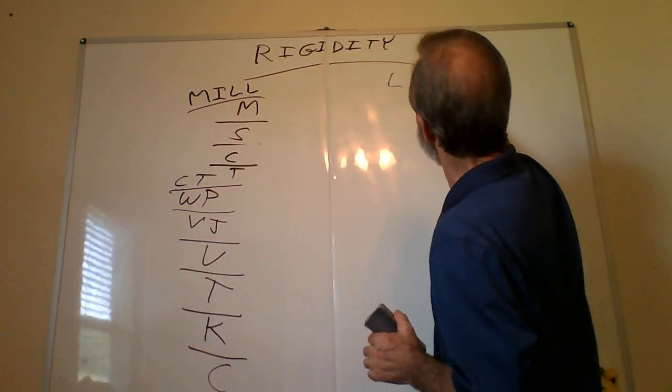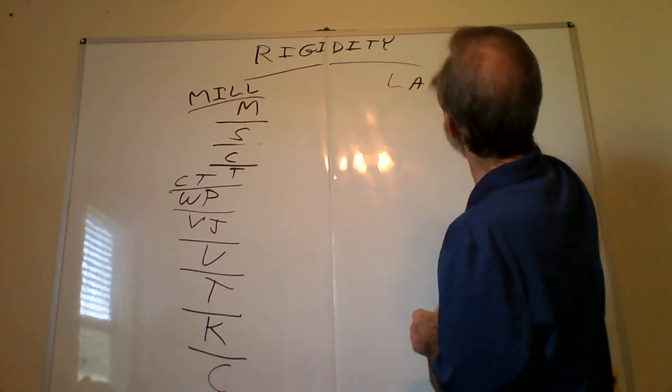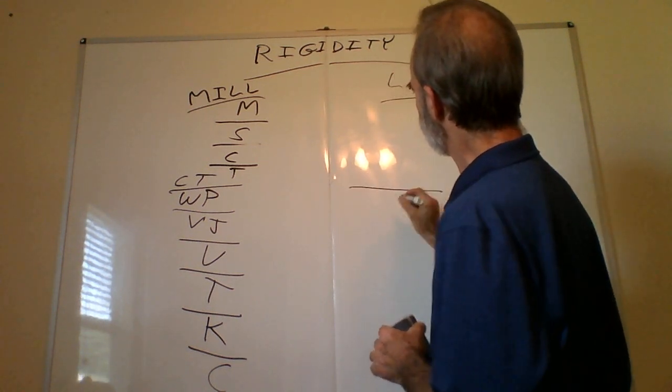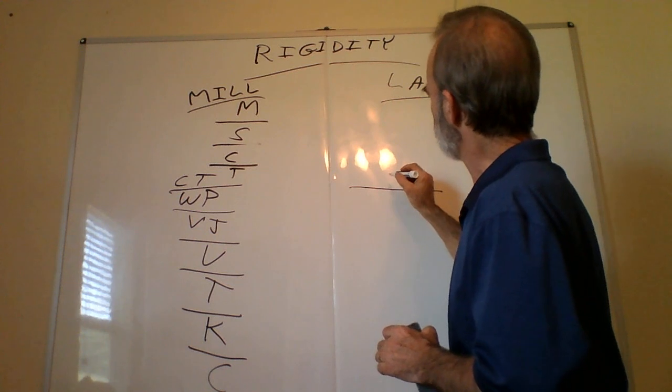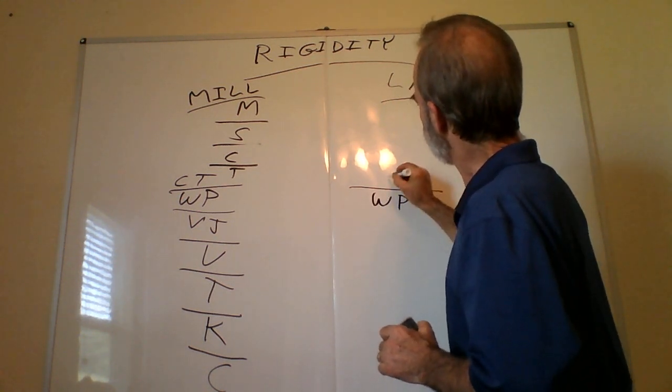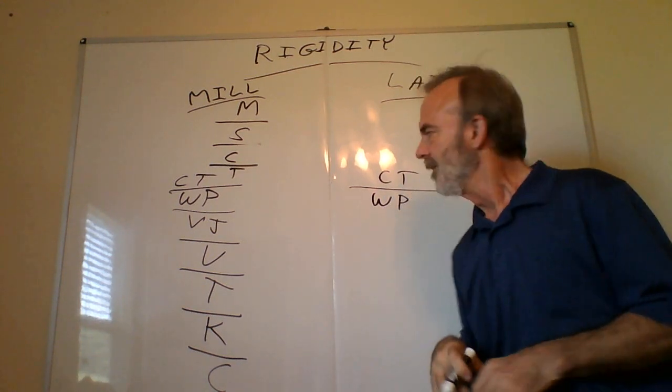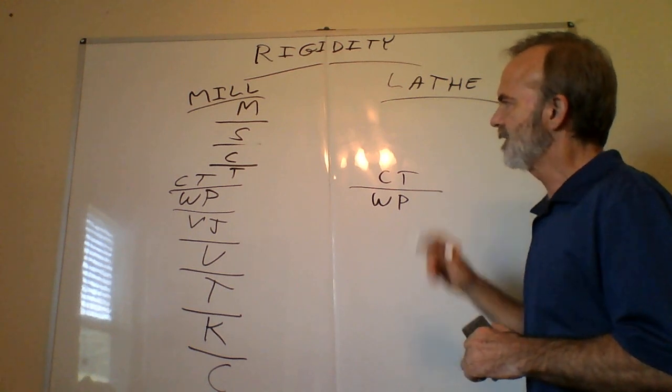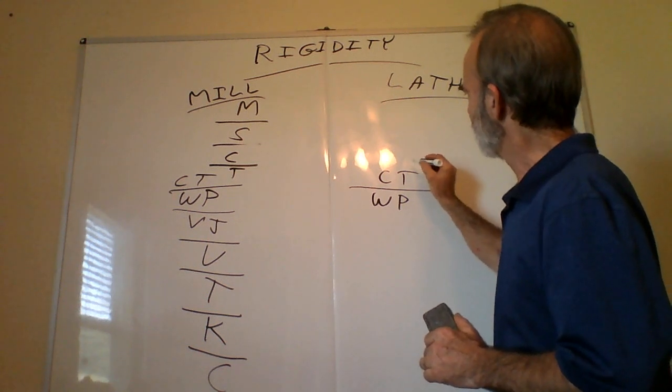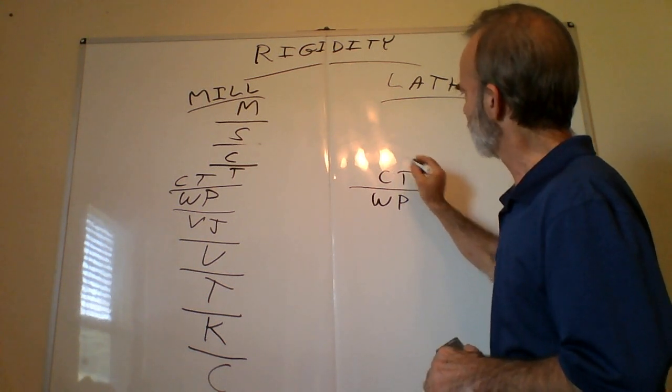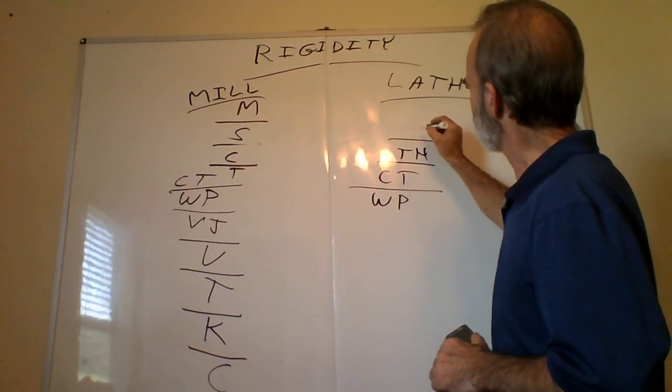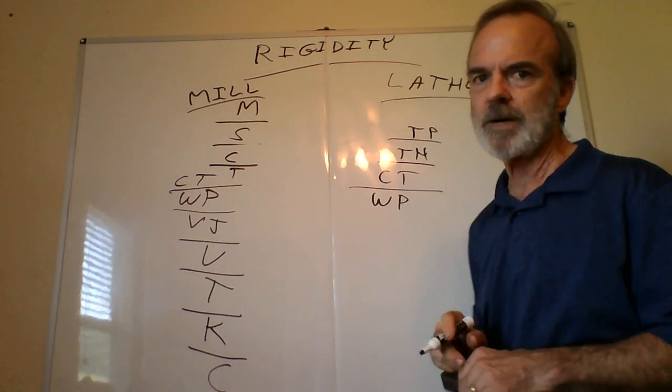On a lathe you've got similar things. Right here in the middle we are going to say this is your workpiece here and this is your cutting tool here. Going from the cutting tool, generally speaking this is a little more complex because the cutting tool a lot of times is a carbide insert, so you've got your cutting tool, your carbide insert to your tool holder. Then from your tool holder you've got it to your tool post, which might be a turret or it might be what we call a QCTP or a dovetail type holder.